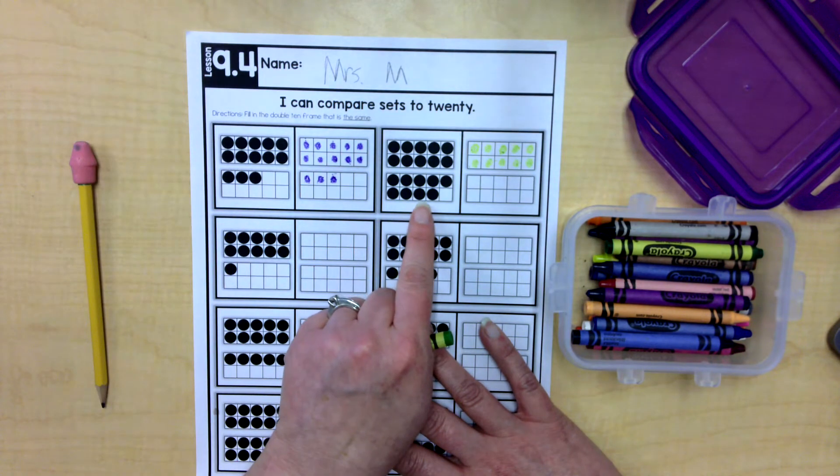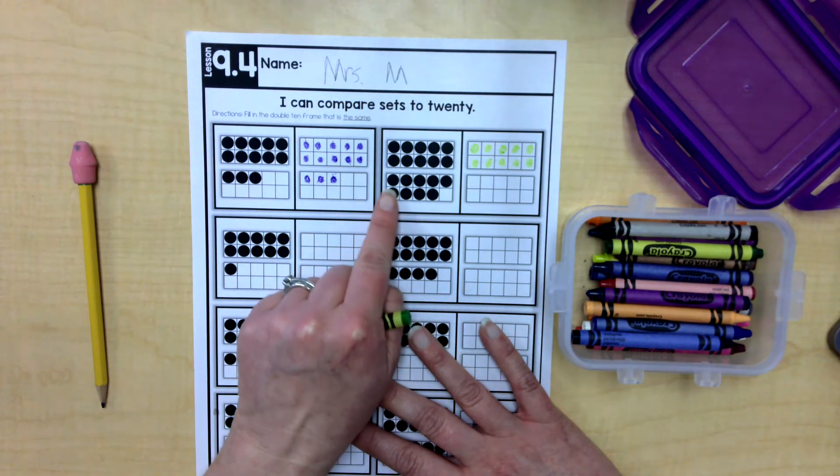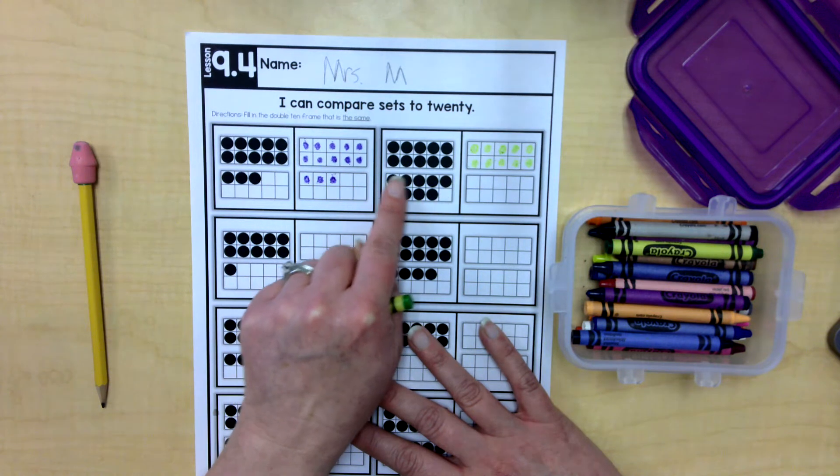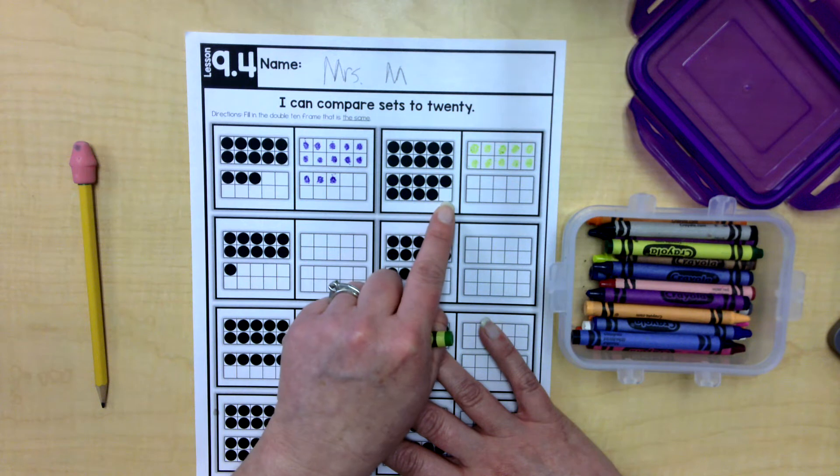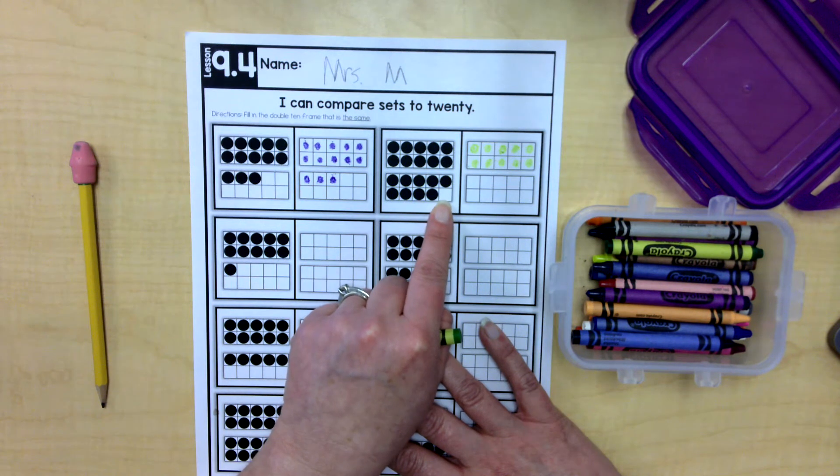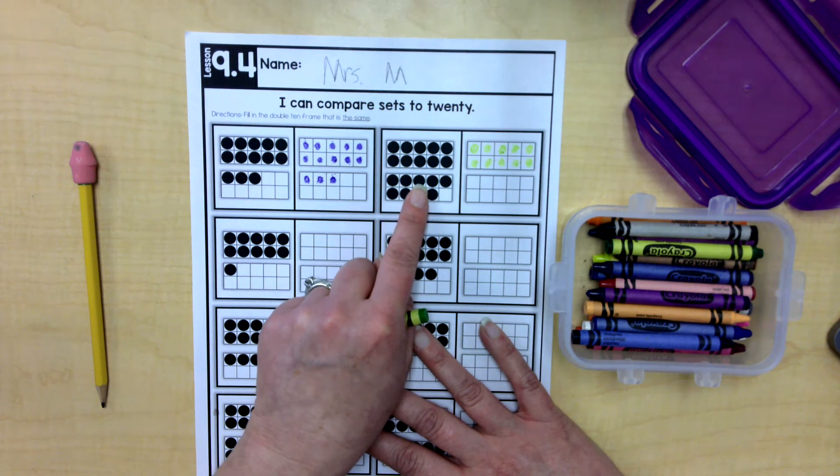Now I wonder how many are in this 10 frame. I know that if the whole 10 frame was filled in, it would be 10, but there's one missing here. What's one less than 10? It's nine. So 10 and nine more. Hmm. 10 and nine more.